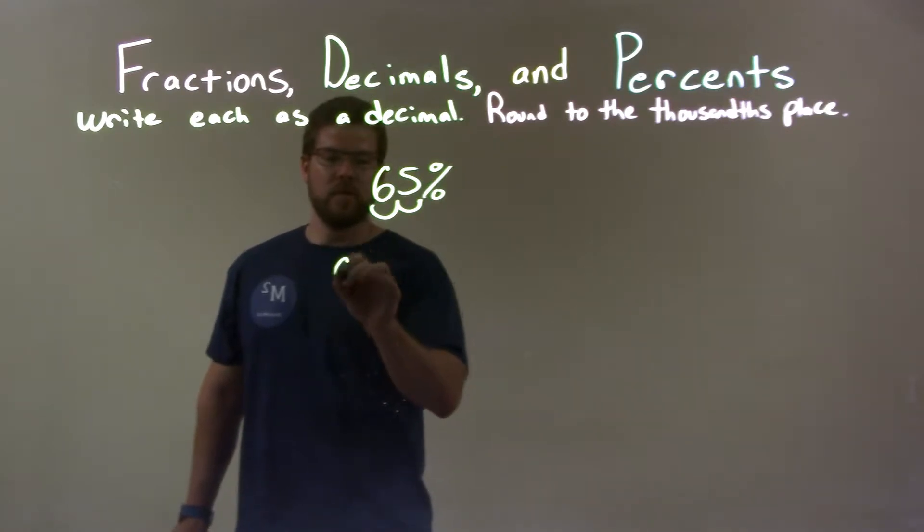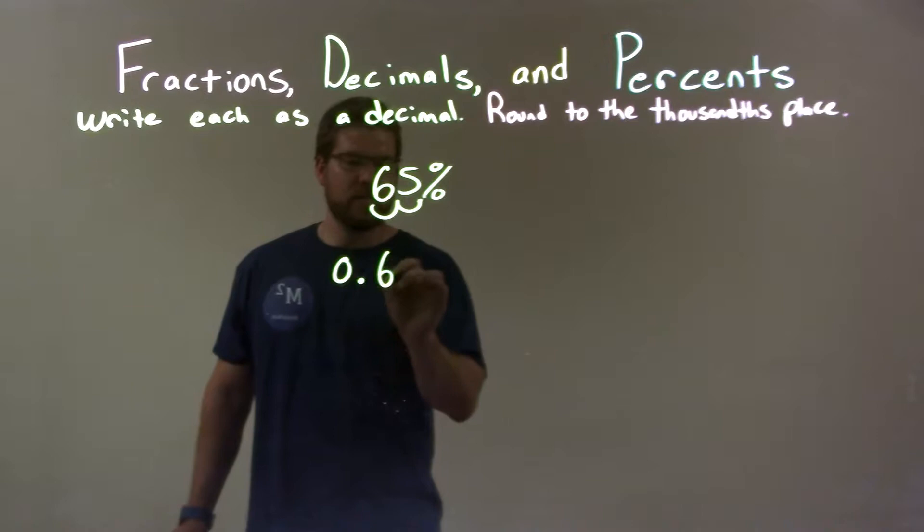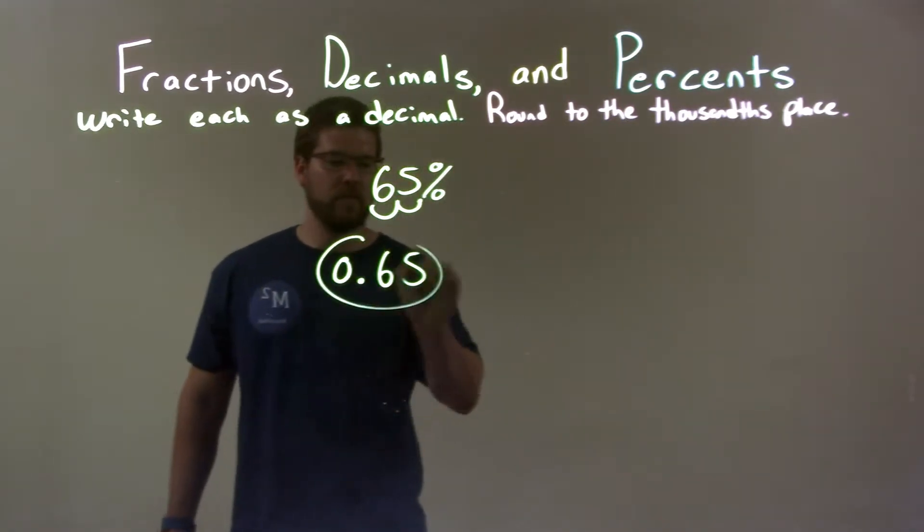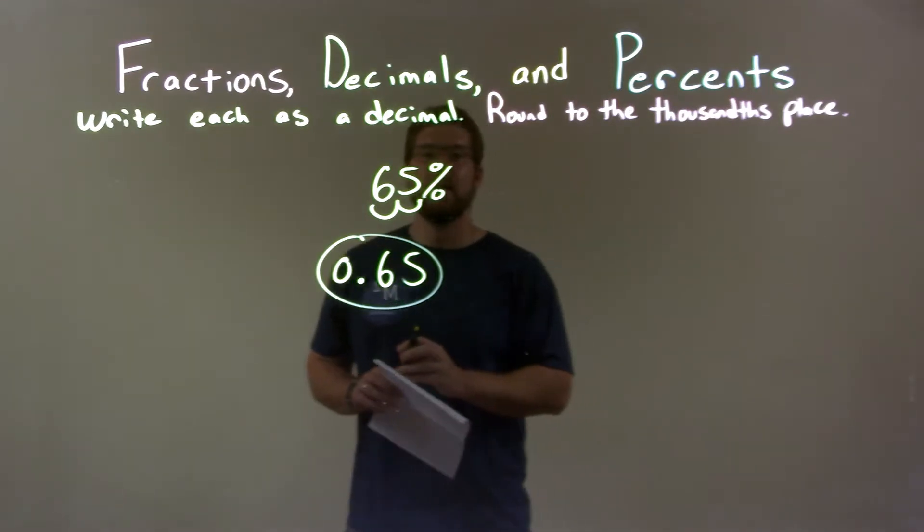So I put a zero for the place up front, then that decimal that's right there. Then we have a 65. And so, that's it. Our final answer is just 0.65, and that's our decimal.